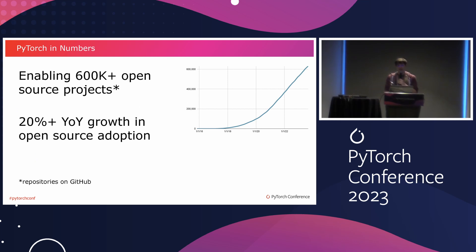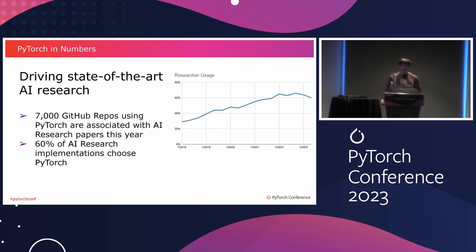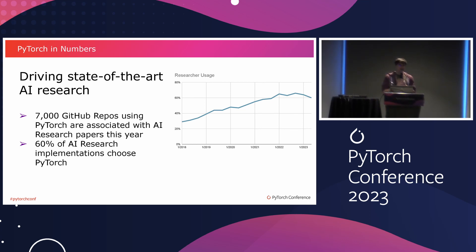All of that enables 600,000-plus repos on GitHub that use PyTorch — a 20% growth year over year. More and more people are actually using PyTorch and publishing code that leverages it. Most of that comes from research: PyTorch is still driving a lot of state-of-the-art AI research. There are 7,000 new pairs of GitHub repos plus research papers published this year, and still 60% of AI research implementations use PyTorch.